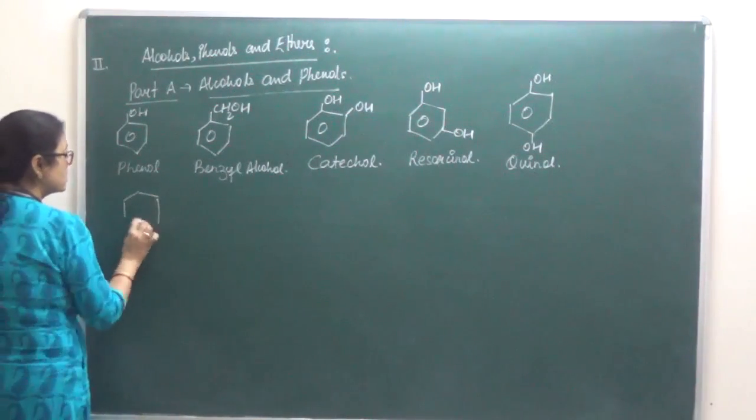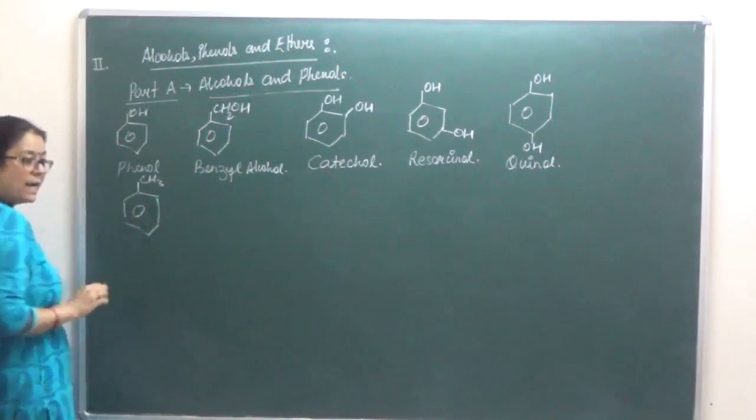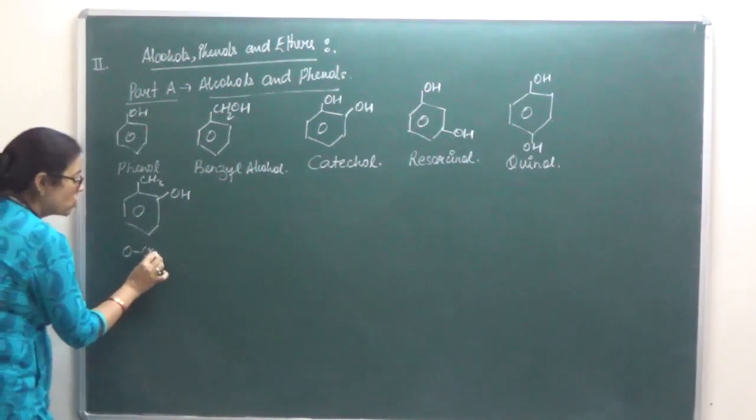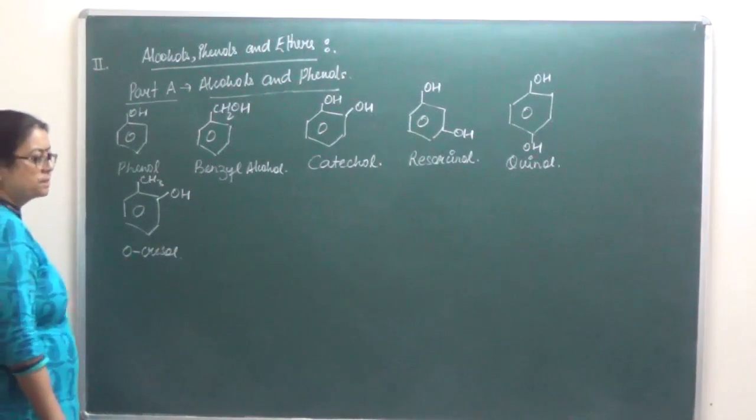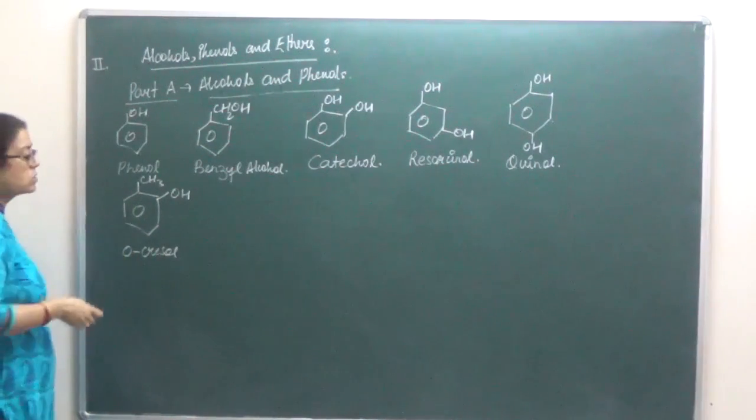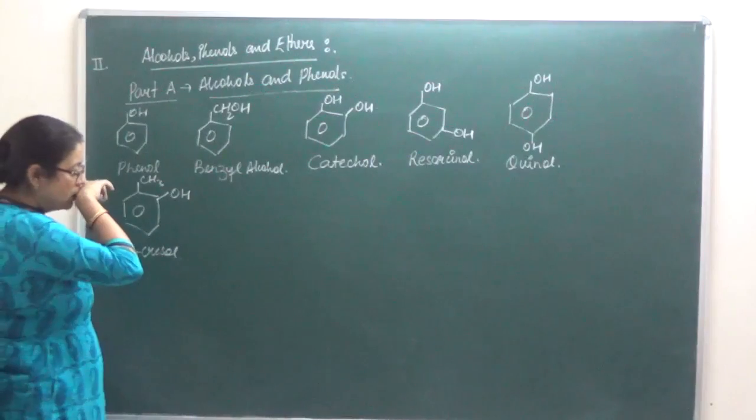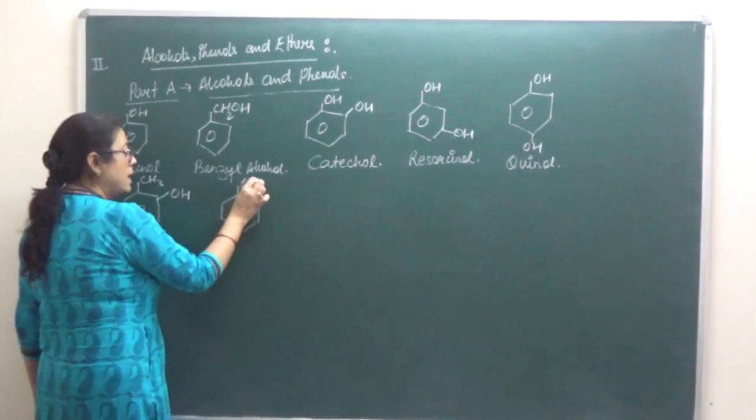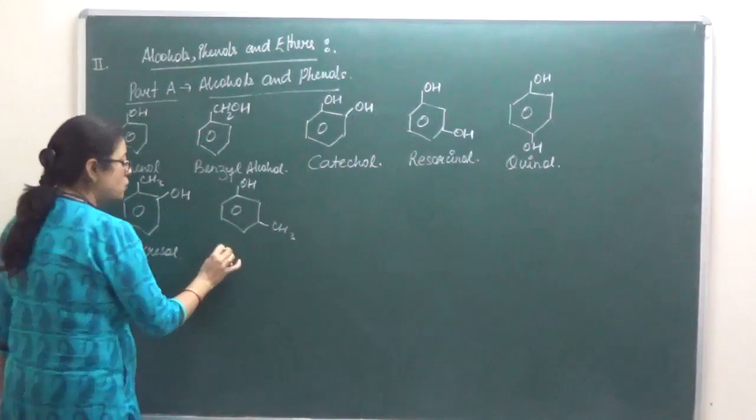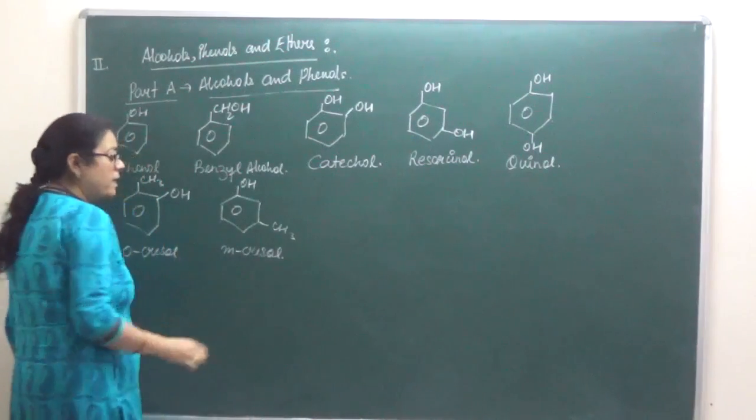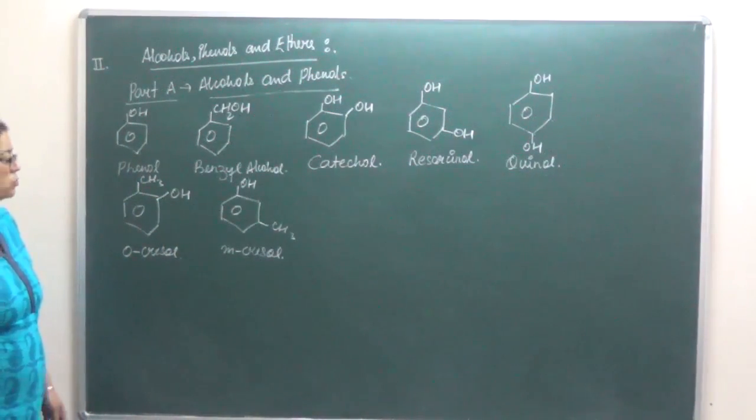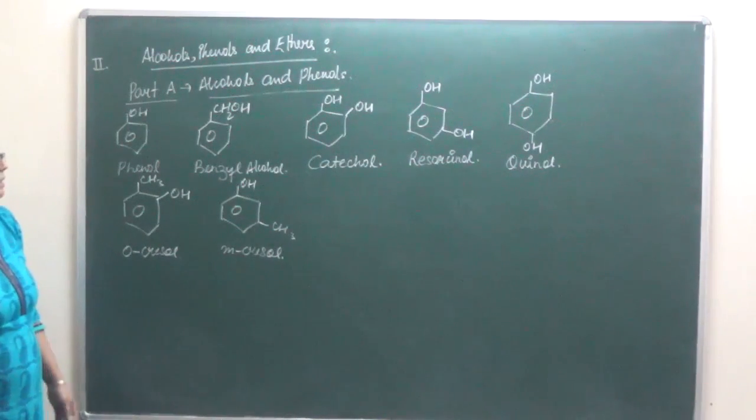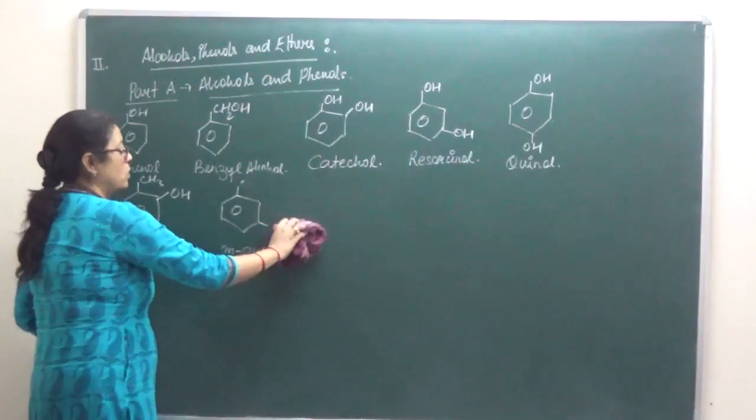If we have one methyl group and one OH present, then this is known as ortho-cresol. IUPAC name is 2-hydroxy toluene. If we shift the OH at the meta position, then this is known as meta-cresol. You can put OH here or there, it's one and the same thing. Both are correct.